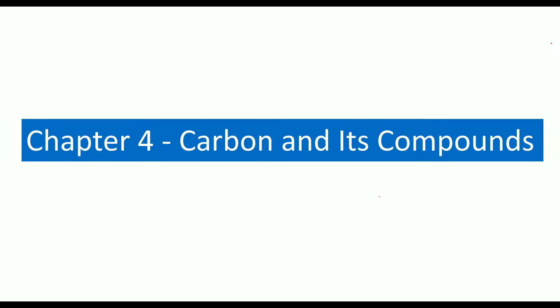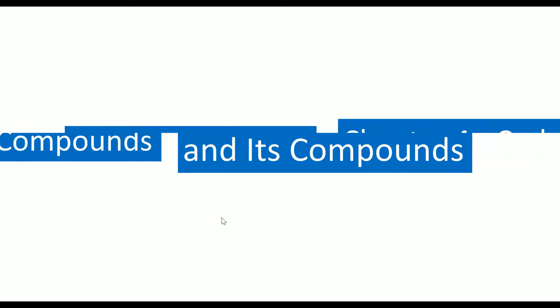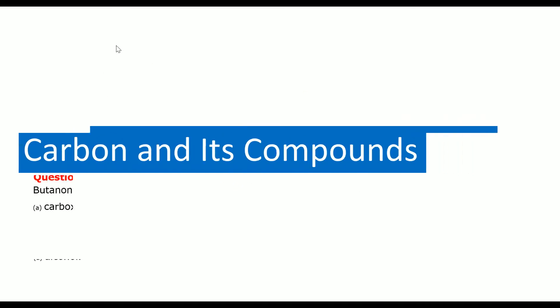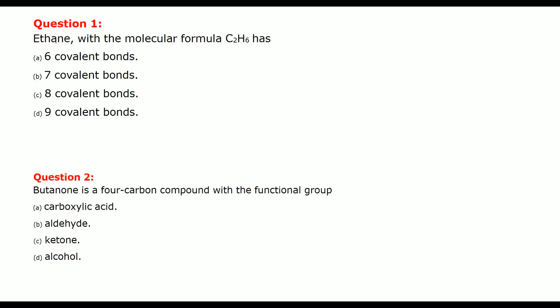We are looking at chapter number 4, carbon and its compounds. Question answers on carbon and its compounds. First is, ethane with molecular formula C2H6 has how many covalent bonds?